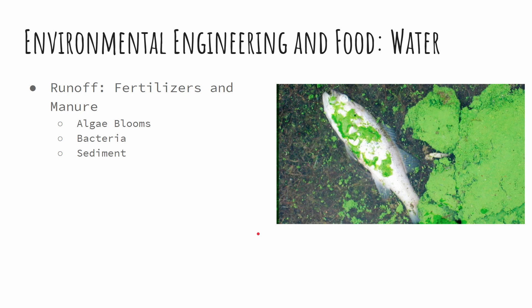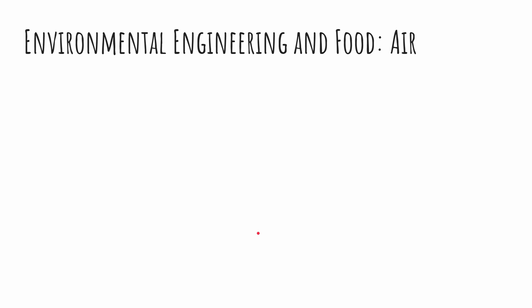Now let's go on to the air. Plants and animals are on the ground, so you might be thinking — how can that affect the air? There are a couple of ways. The first is from particulates. It's basically the same idea as runoff — things we're putting on the plants — except sometimes that stuff gets picked up by the wind and blows away. So there are particulates of pesticides, fertilizers, and animal byproducts that can get up into the air and cause a lot of dust.